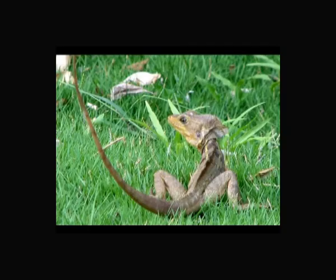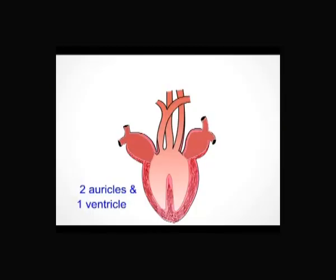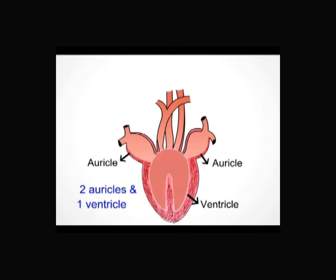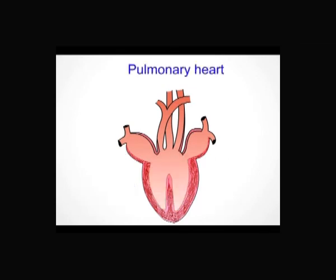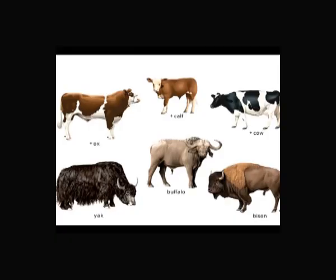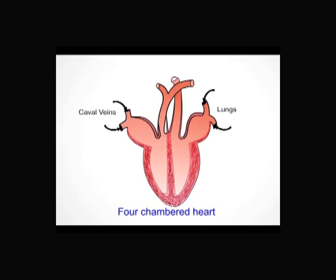In reptiles like lizards and snakes, the heart has two auricles and one ventricle, but the ventricle is incompletely divided into two chambers, making it an incompletely divided four-chambered heart. The circulation is double circulation and the heart is a pulmonary heart. In birds and mammals, the heart is completely divided into four chambers — two auricles and two ventricles.